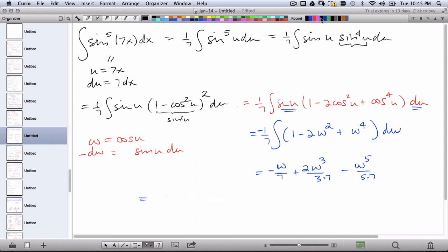you want negative cosine 7x over 7 plus 2 cosine 7x cubed over 21 minus cosine 7x to the fifth over 35. And then let's not forget our plus c at the end.